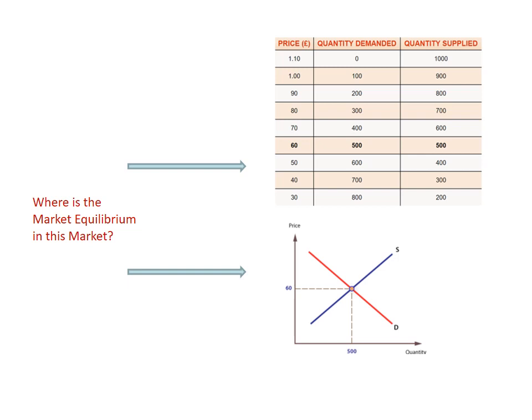Now, remember what we said from our first lecture: demand has a negative relationship with price, and supply has a positive relationship with price. We said the market is in equilibrium when quantity demanded is equal to quantity supplied, here at price 60. So you can see at price 60, demand is 500 and supply is also 500 — that is the point of market equilibrium. But how can we use maths to calculate this?